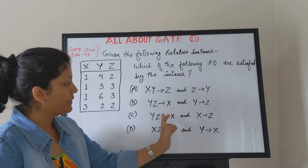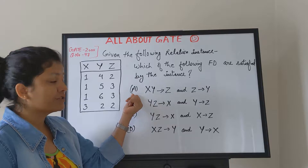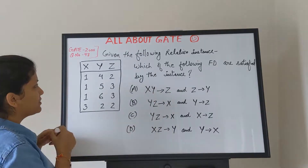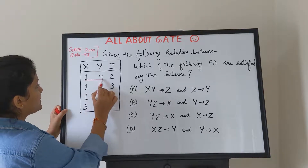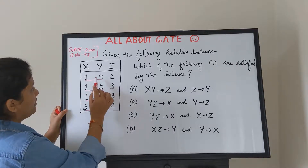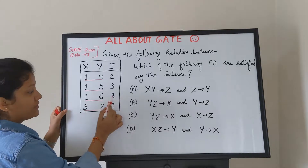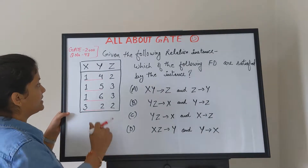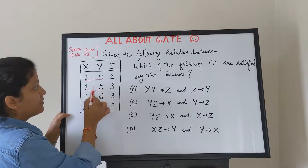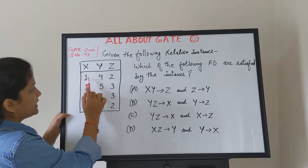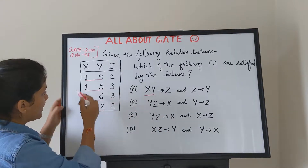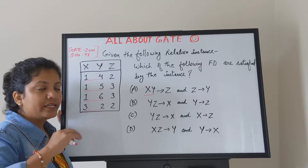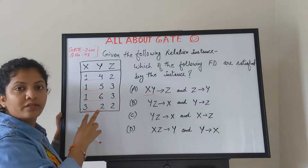The options have two dependencies combined — both must be true for the option to be correct. Let's check XY → Z: XY together determines Z. The pairs are (1,4)→2, (1,5)→3, (1,6)→3, (3,2)→2 — all distinct XY values. Here is a short trick: if the determinant values are all distinct, there is no violation, so XY → Z is true.